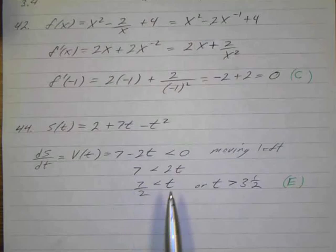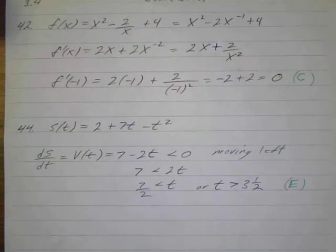So I solved this, and it's going to be moving to the left when t is greater than 7 halves, or when t is greater than 3 and a half. Not equal to 3 and a half, that's actually basically when it's going to stop.